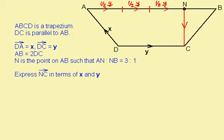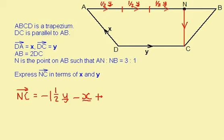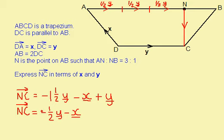I can now work out what NC is. It's minus one and a half vector y, minus vector x, plus vector y. I can now simplify this to get minus a half vector y minus vector x. So vector NC equals minus a half vector y minus vector x.